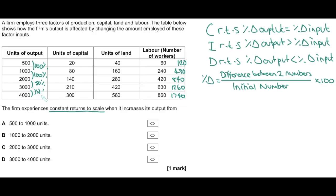If you can see those percentage changes quickly, great — if not, use the equation. Now we look at percentage changes in inputs. The first change is going to be greater than 100%, so that's not constant returns. The next one, using the equation, gives 75% — so 75% increase in inputs versus 100% increase in outputs, that's increasing returns, not constant. For the next change from 840 to 1260, that's a 420 change divided by 840 times 100 — giving a 50% change in inputs, exactly matching the 50% change in output. Constant returns to scale confirmed — from 2000 to 3000 units of output.